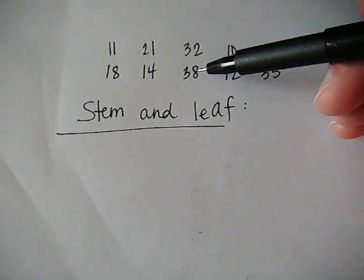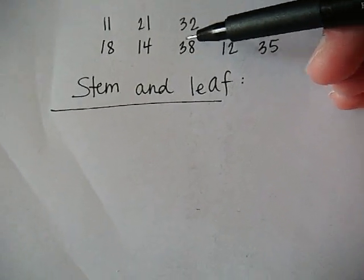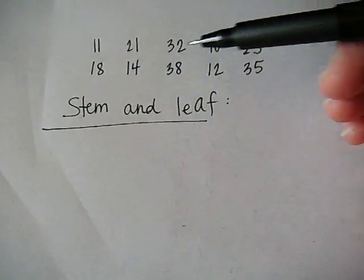With something like this, generally the last digit is going to be the leaf part and the other digits to the left of it are going to be the stem.